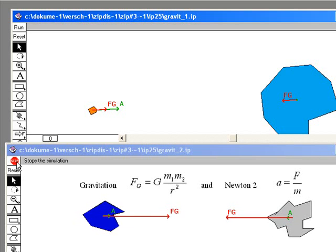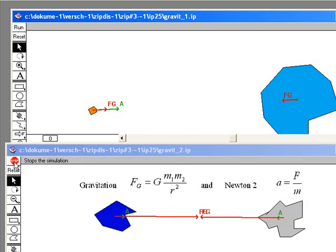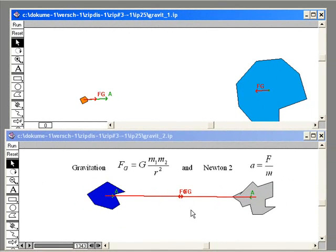I'm going to run this here. As you can see, the closer they get, the larger the force is. The acceleration here depends on that force, which is the same for both, divided by the mass of each object.